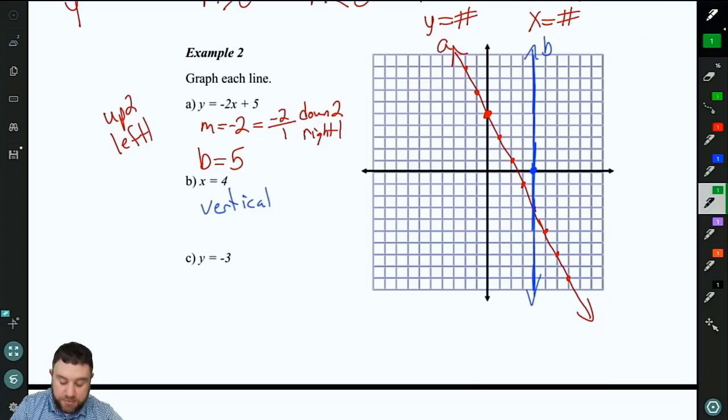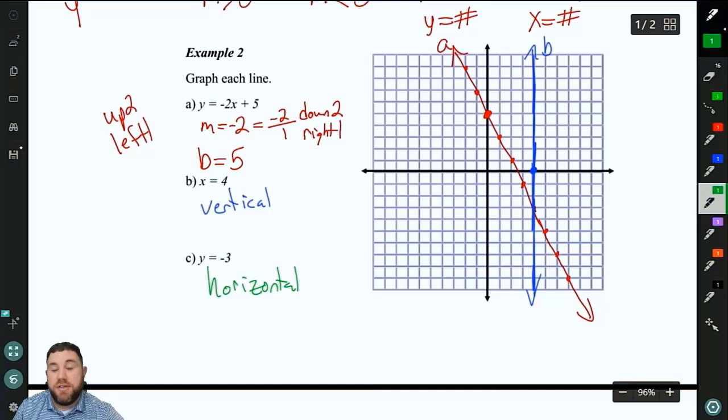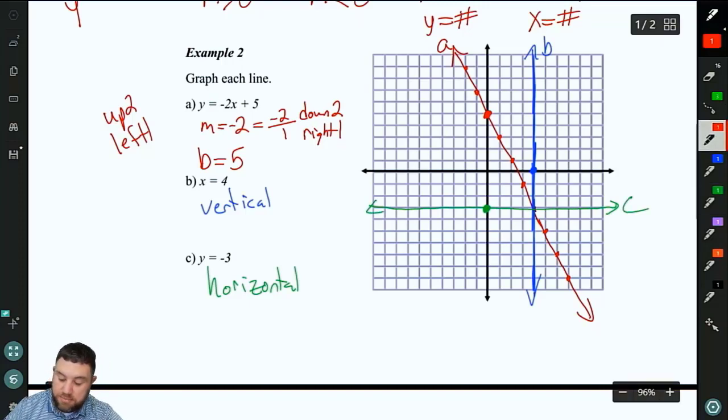And then for C, we've got y equals negative 3. That's a horizontal line because there's no x, so our slope is 0 through negative 3. So we put a point on negative 3 on the y-axis. And we draw our line horizontally. So I'll label that one line C.